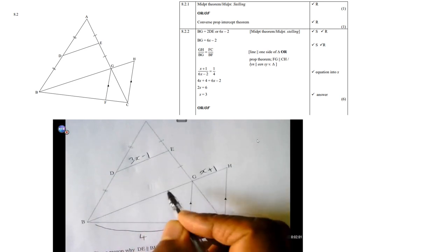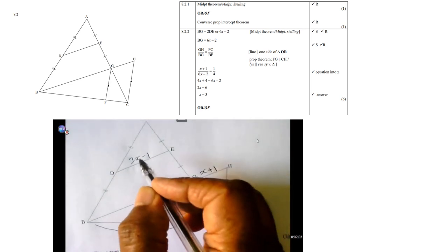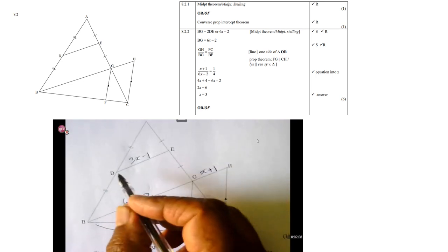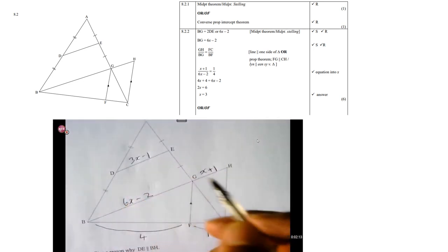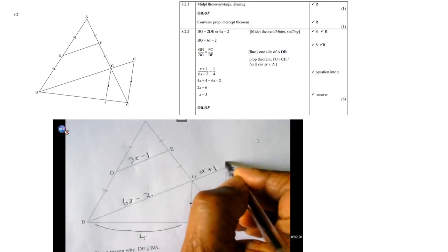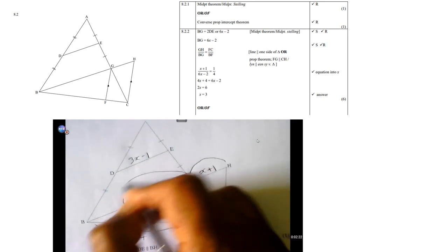Now, remember that BG, look at BG here. BG, like I said previously, is double 3X minus 1. So, therefore, this should be 6X minus 2. Remember, that line is half of that line, or this line is double that line. So, therefore, BG is 6X minus 2. So, therefore, GH over BG is the same as FC over BF. Why? Because those two lines are parallel.